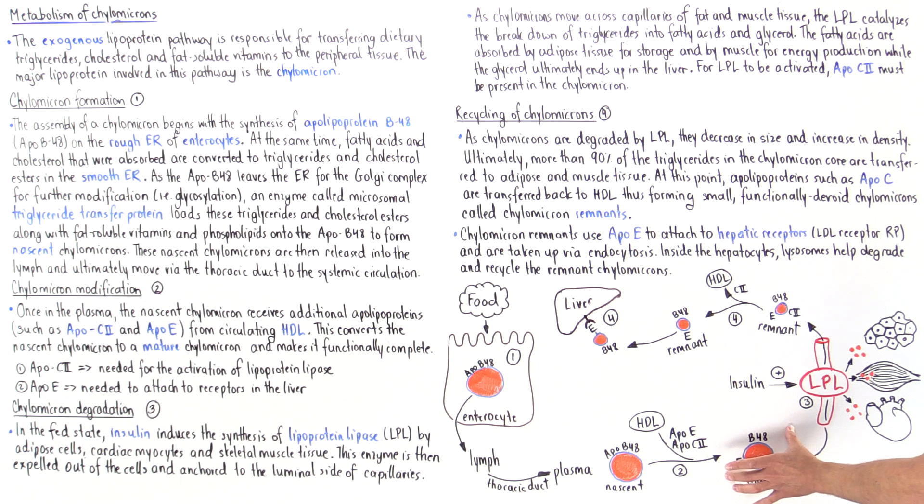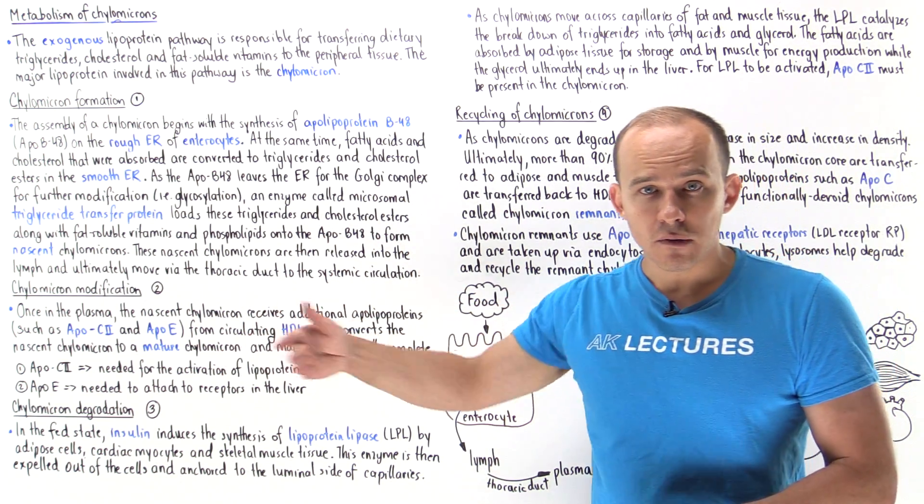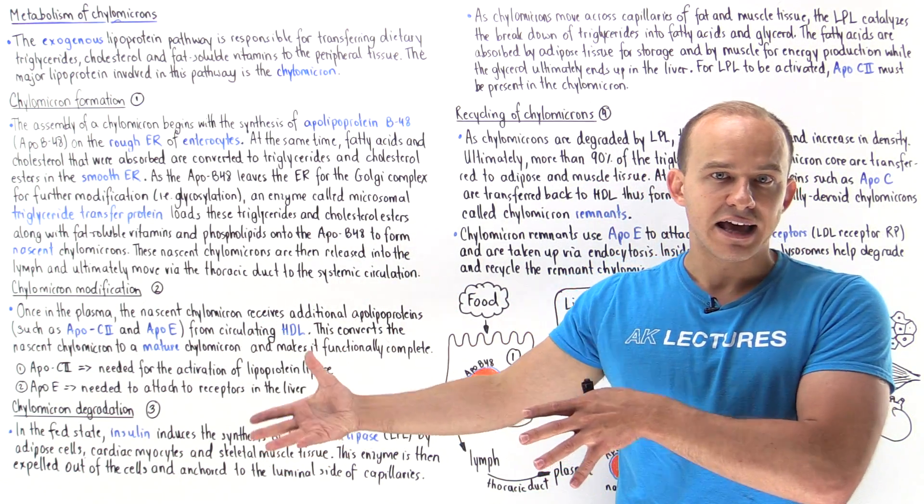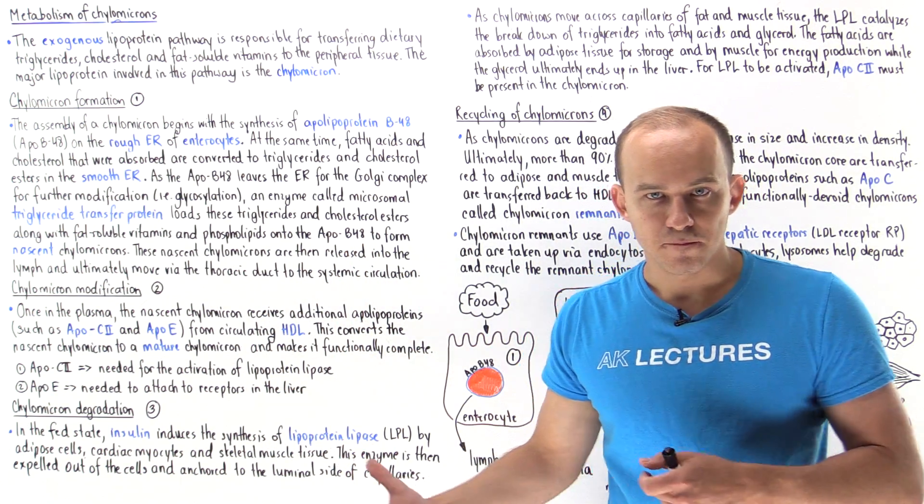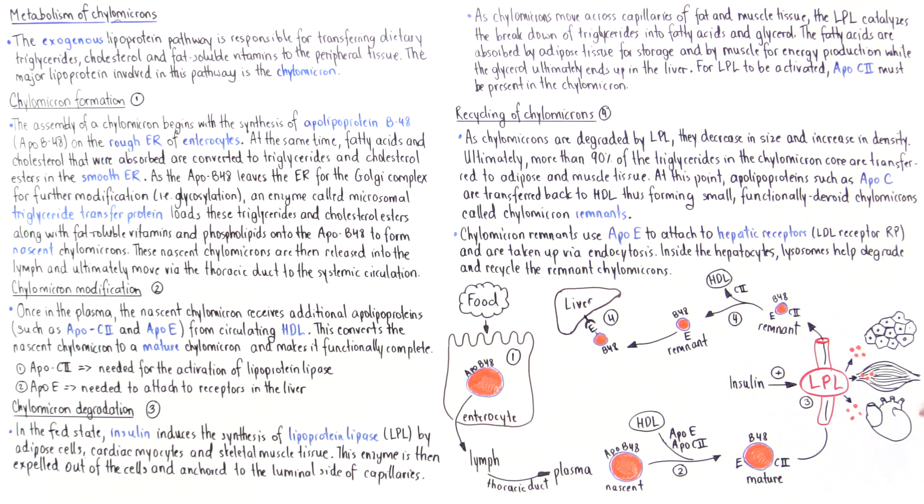When the mature chylomicron moves through the capillaries, the lipoprotein lipase acts on the triglycerides within the core and transforms the triglycerides back into fatty acids and glycerol. The fatty acids are absorbed by these cells. In adipose tissue, it's stored for later use. In skeletal muscle tissue and cardiac tissue, it's used to produce energy molecules, ATP molecules.